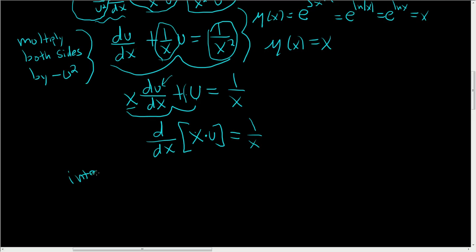Integrate both sides. When you integrate the left-hand side, you just get x times u. And over here, you get the natural log of the absolute value of x plus some constant, which we'll call c1. All right.